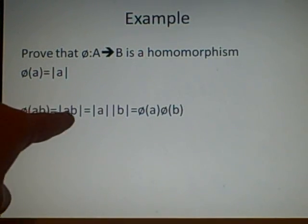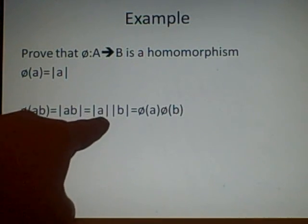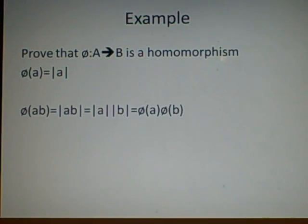So phi of ab is the modulus of ab, which can be split up again to modulus of a times modulus of b, which is therefore phi a times phi b. So we proved that you can multiply them, and we also need to prove that you can add them.